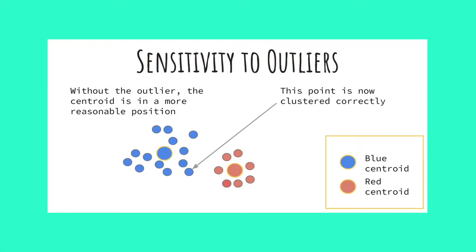In this slide, all of the data points have remained in the same position, but the outlier has now been removed. With the outlier gone, the centroid is in a more reasonable position relative to its cluster. Because of this, the previously misclustered data point is now in the correct group.